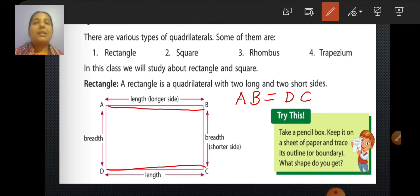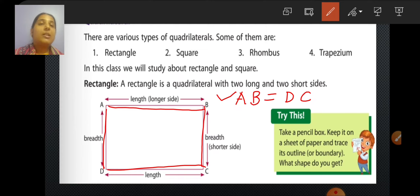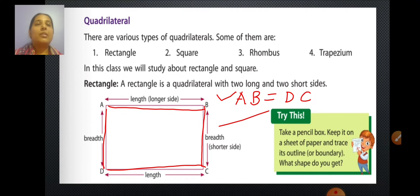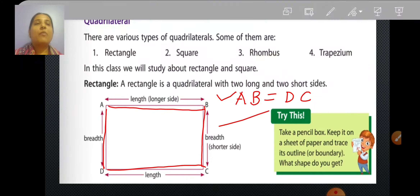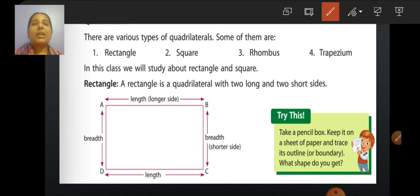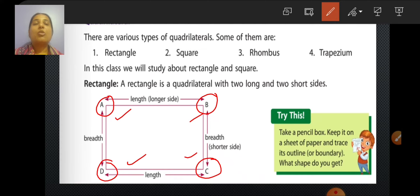AD equals BC — these two short sides are opposite to each other and equal. A rectangle has four vertices: vertex A, vertex B, vertex C, and vertex D — that is 1, 2, 3, and 4 vertices. So a rectangle has four vertices.